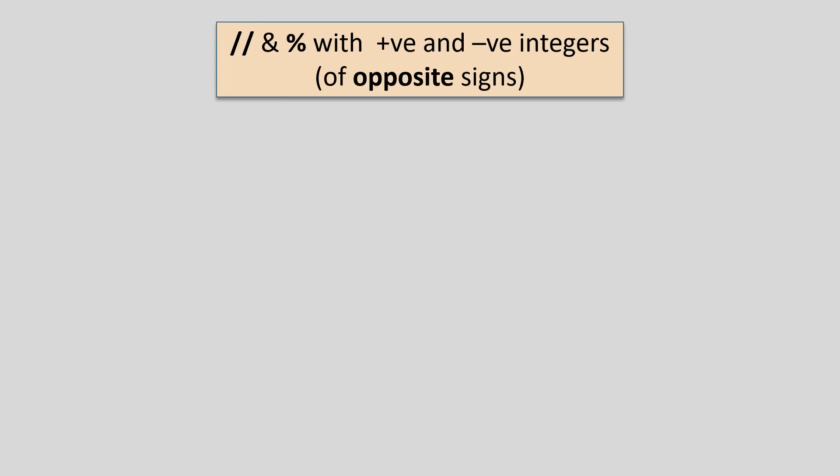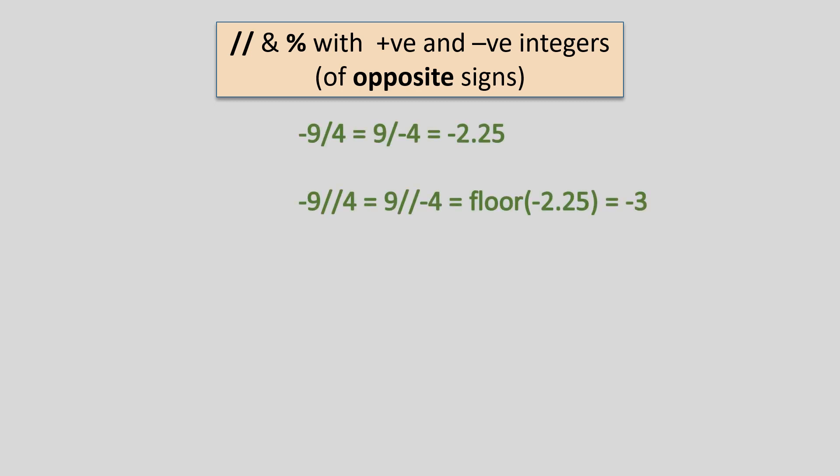Let us now see integer operands of the opposite sign. Whenever the operands have opposite signs, the quotient is always negative. Like in the case of minus 9 divided by 4 or 9 divided by minus 4, the quotient is minus 2.25. Therefore, floor division of minus 9 by 4 or 9 by minus 4 returns the floor of minus 2.25, which is minus 3. To calculate the remainder, we apply the same formula: remainder = dividend minus divisor multiplied by floor of quotient.